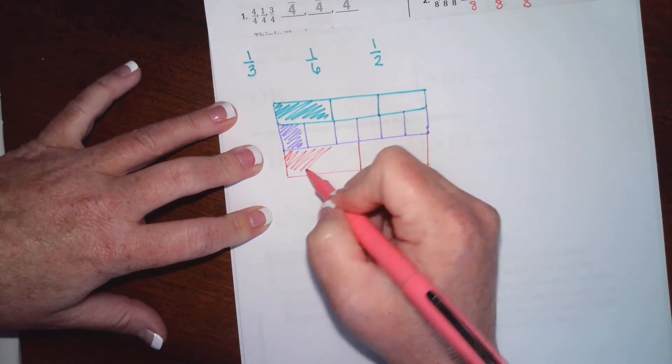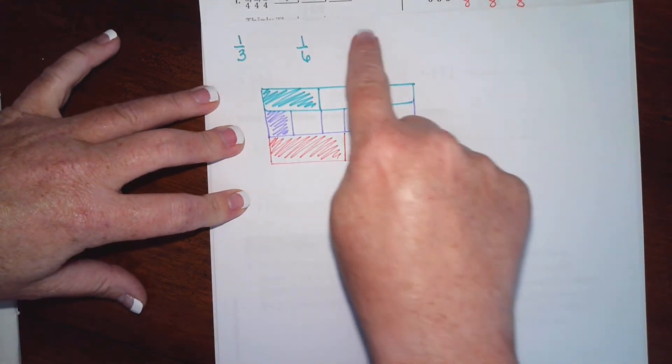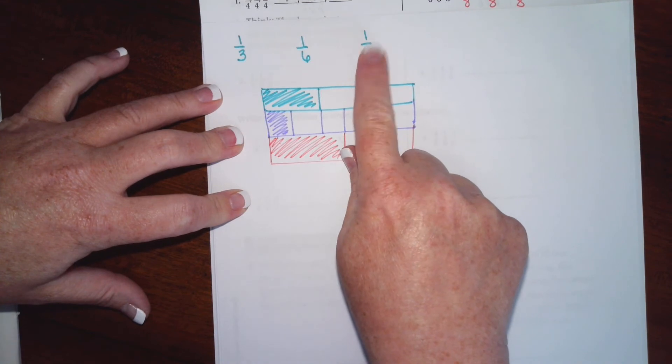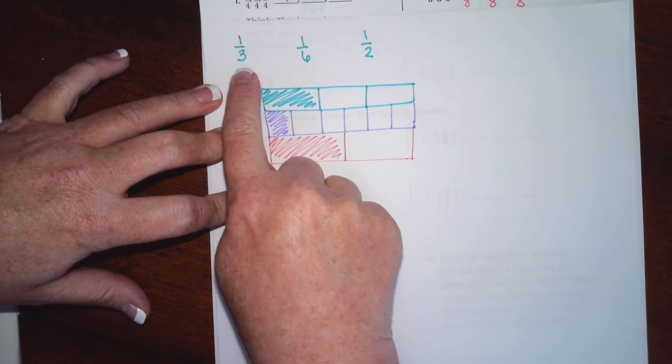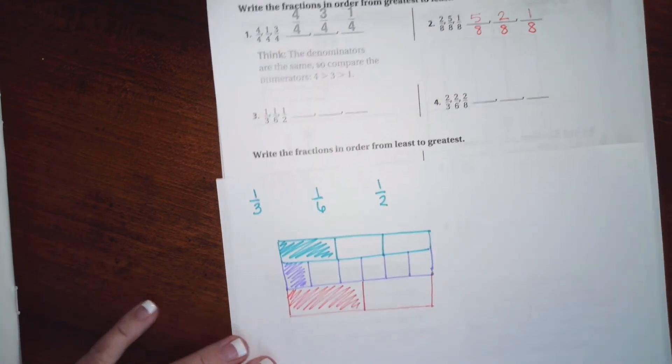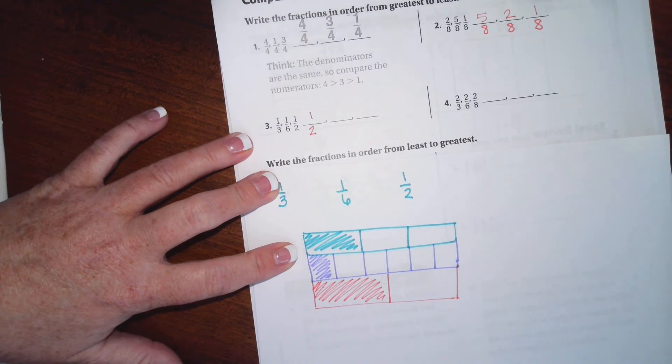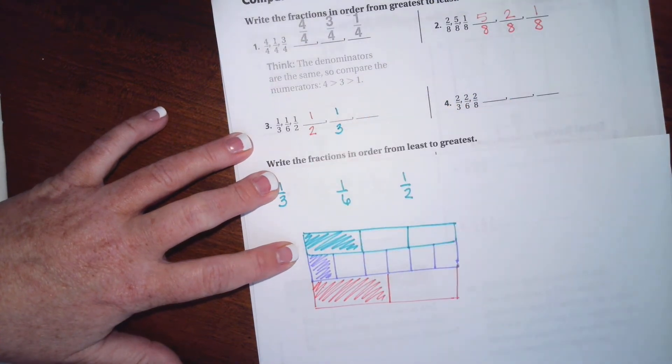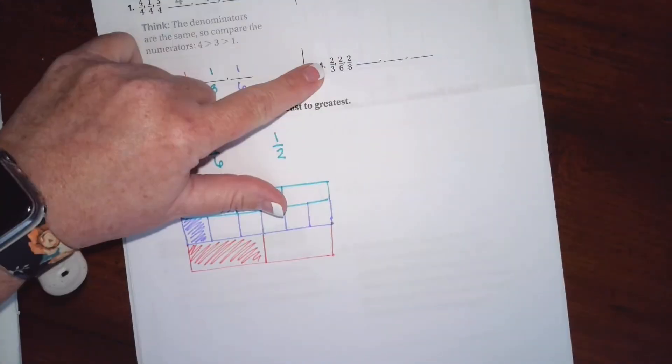And one of those will be colored. So now you can see that as long as the top number is the same, the smallest bottom number is going to be the largest filled in. Second one is right there, third one is right there. So greatest to least, we're going to write in one half.